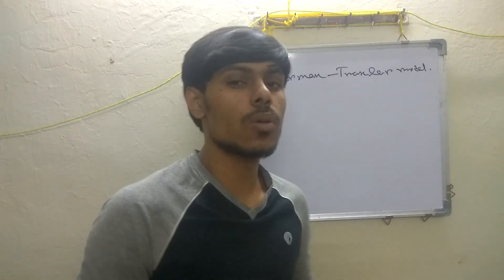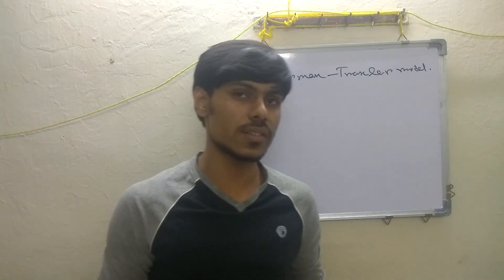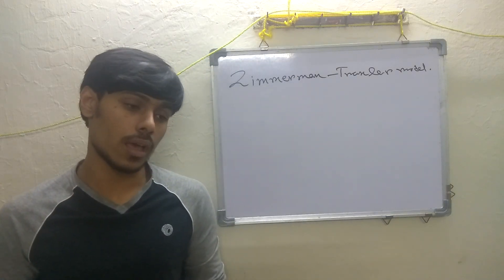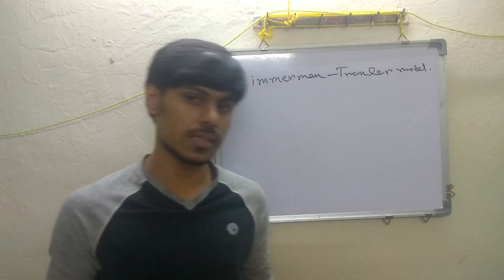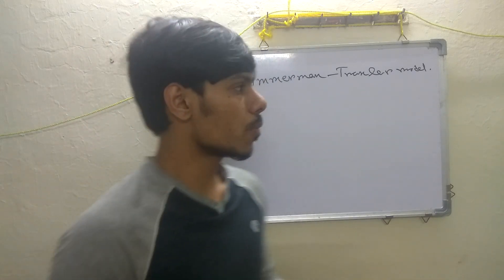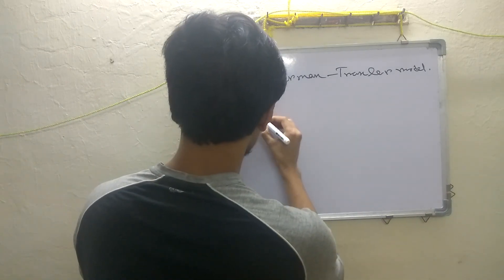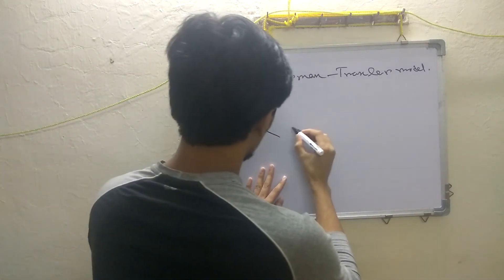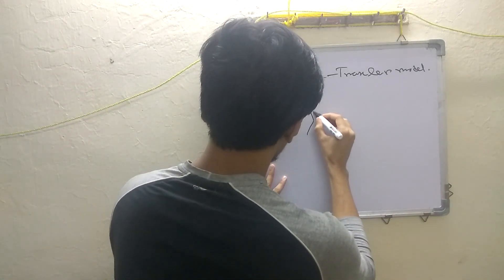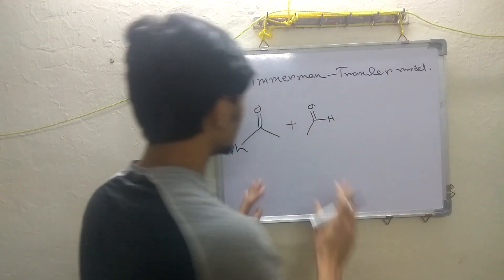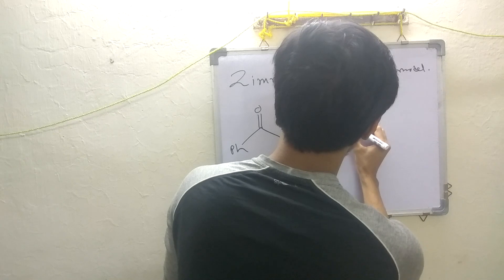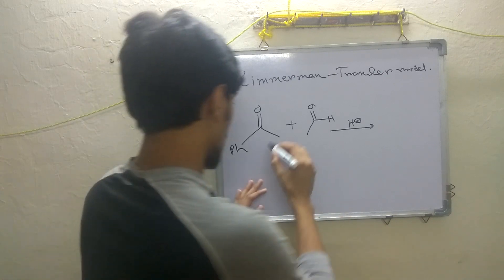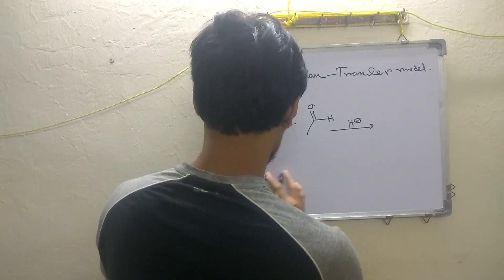In my previous video I discussed aldol condensation reactions in acidic or basic media, and showed examples of self-aldol condensation. But suppose you have to do an aldol condensation where you have one ketone and you want to react it with an aldehyde. In this case, if you simply treat it with acid or base, you will end up with a mixture of aldol products.